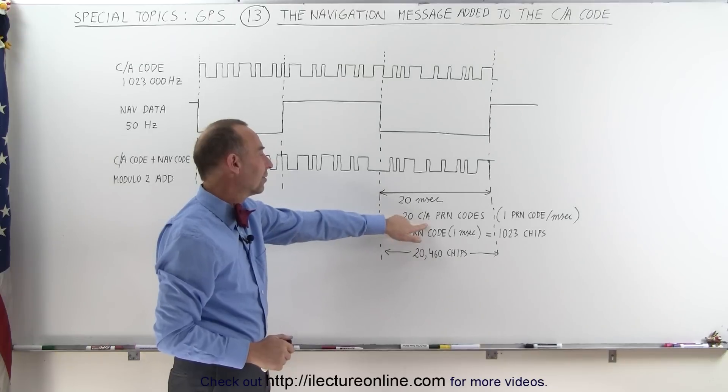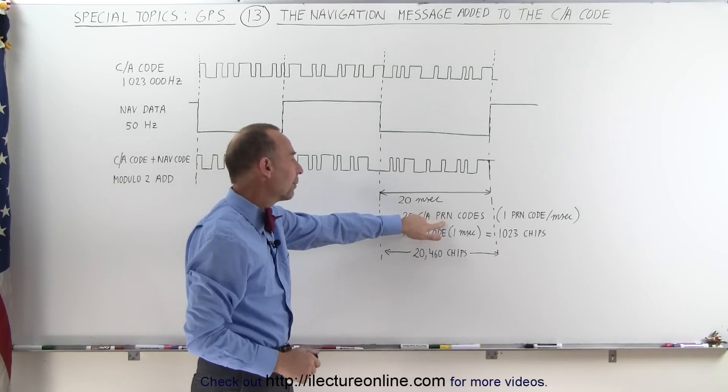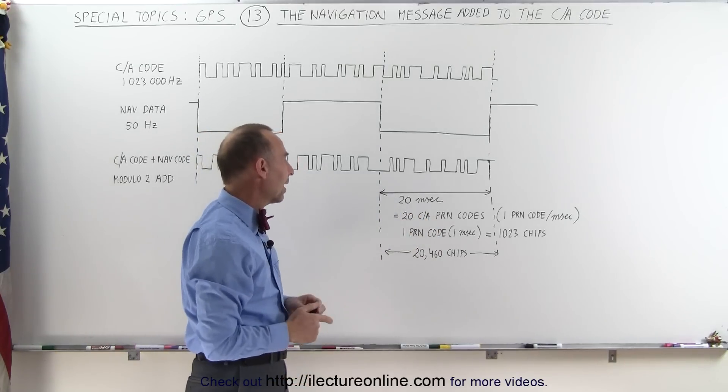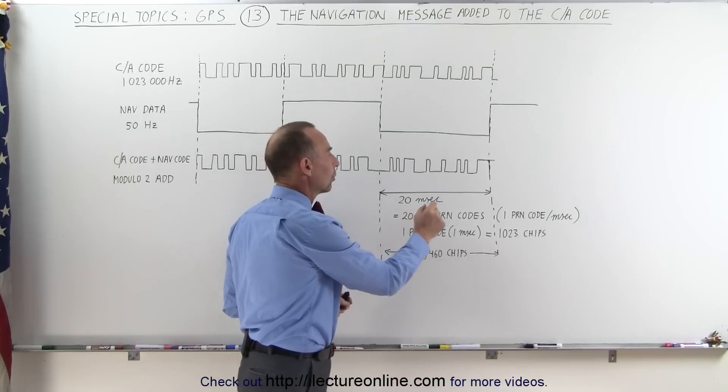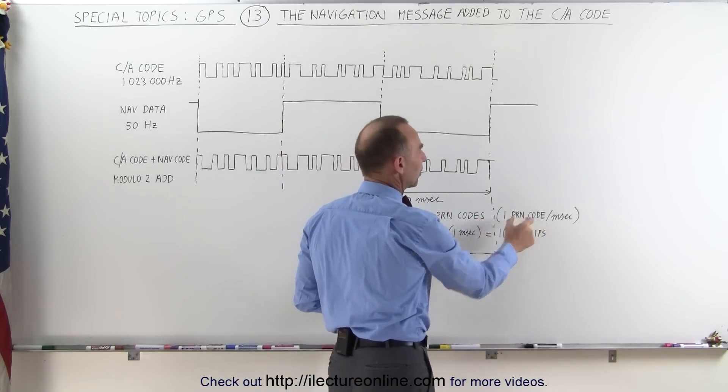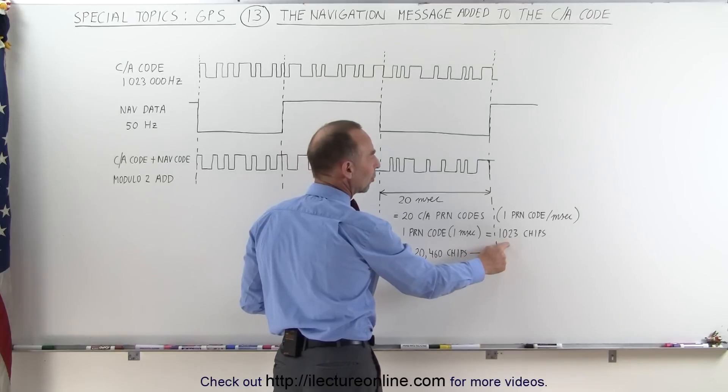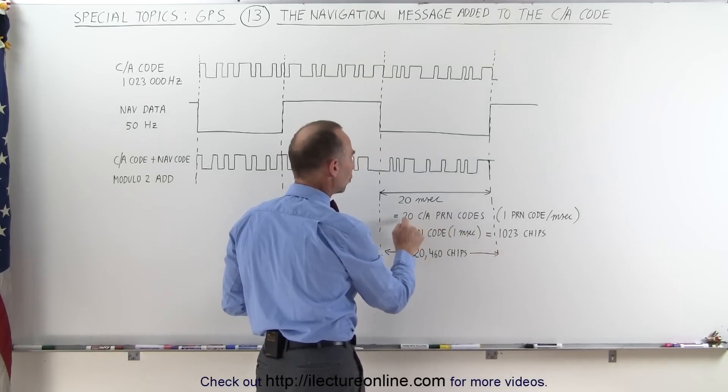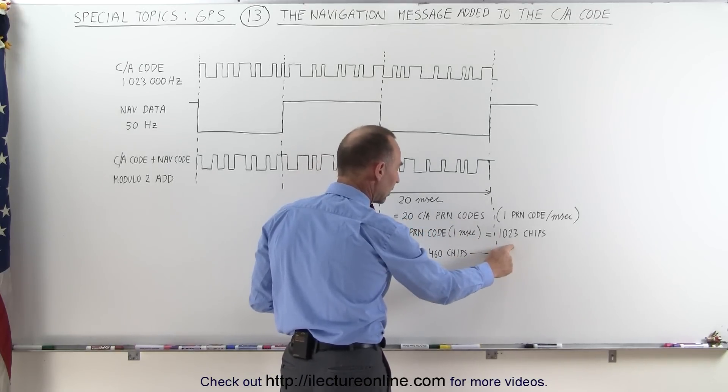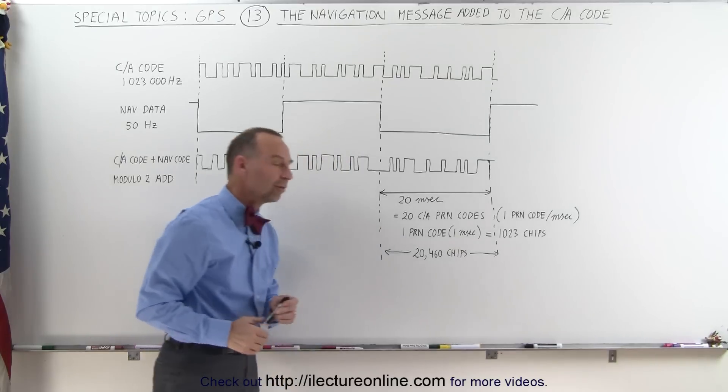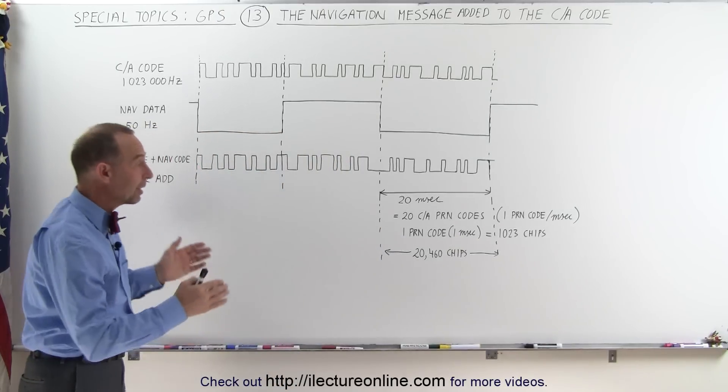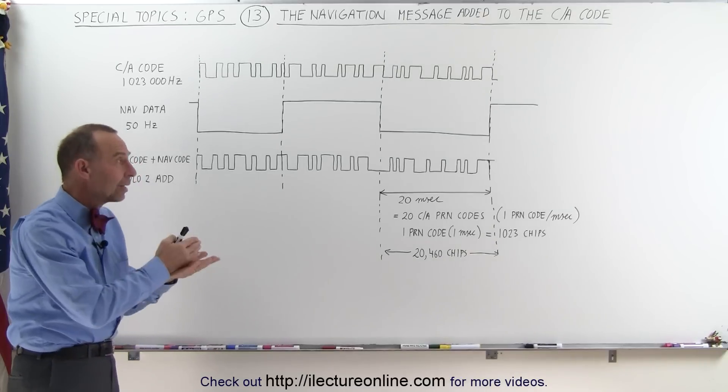20 milliseconds means we have 20 CA codes or what we call PRN codes during that time because each PRN code requires one millisecond. Since each PRN code contains 1023 chips, we multiply 20 times 1023 and we get the 20,460 chips within the PRN code that then gets added to the navigation data.